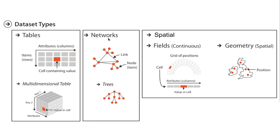Networks are datasets that have nodes and links that connect nodes together. A subset of network datasets are trees, where there's a clear hierarchical structure, where nodes are children of other nodes, which are ultimately children of one root node of the tree.